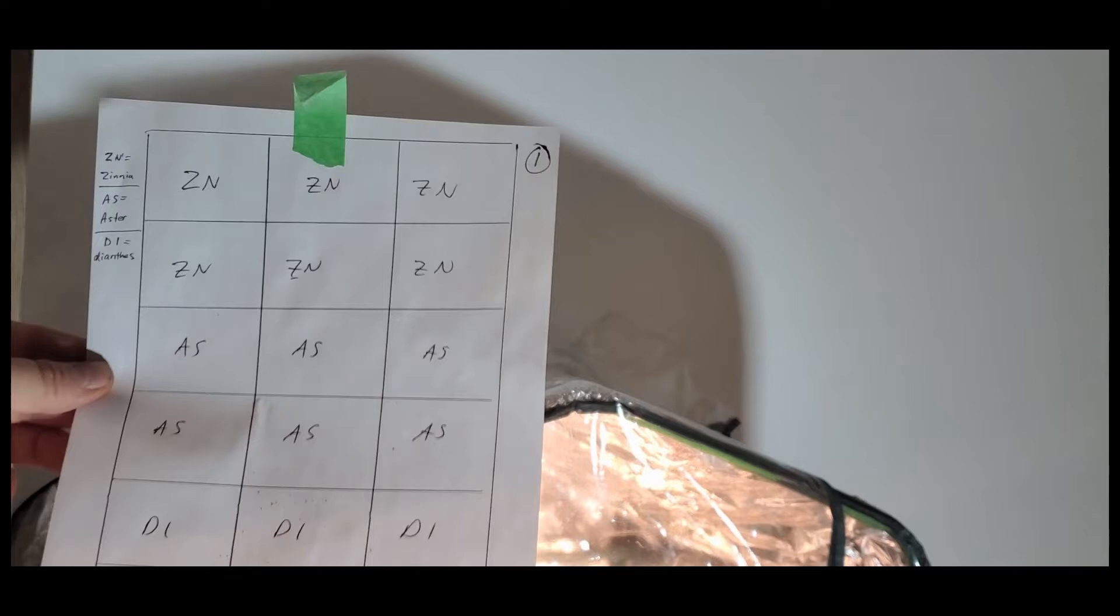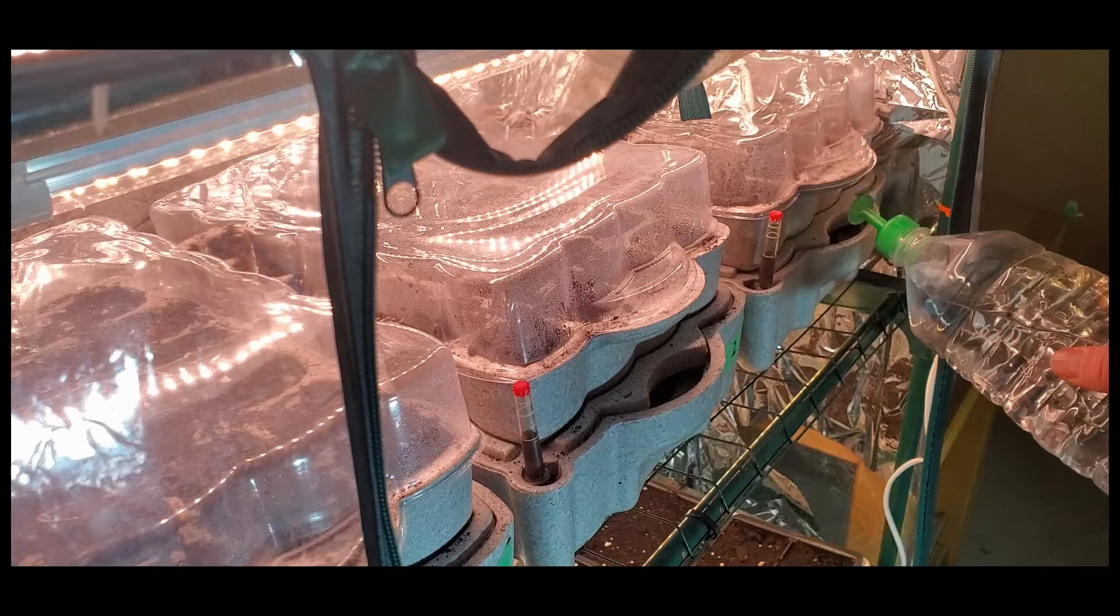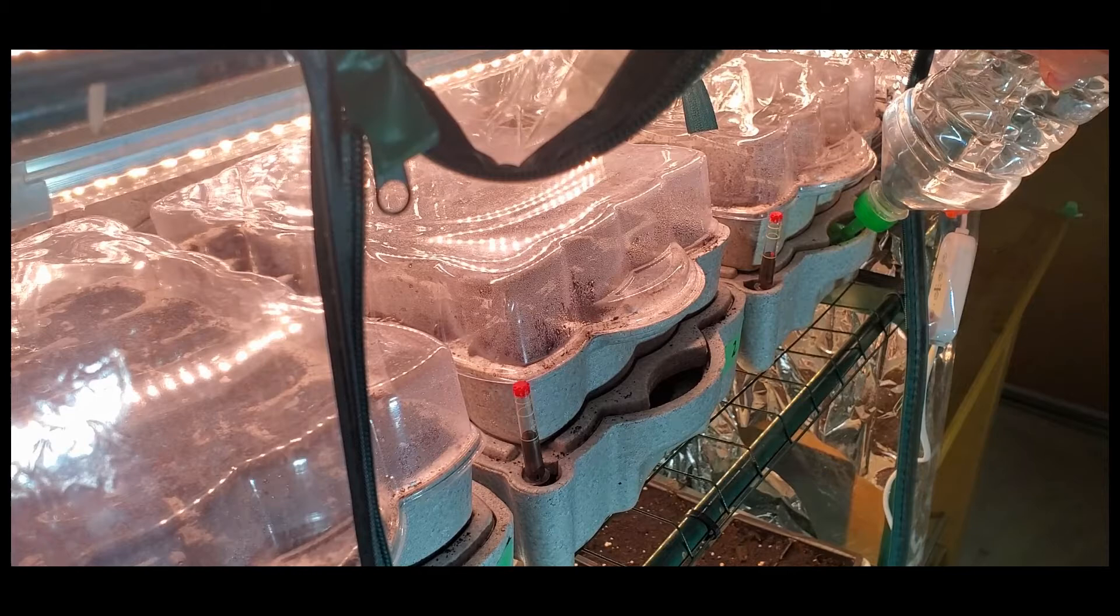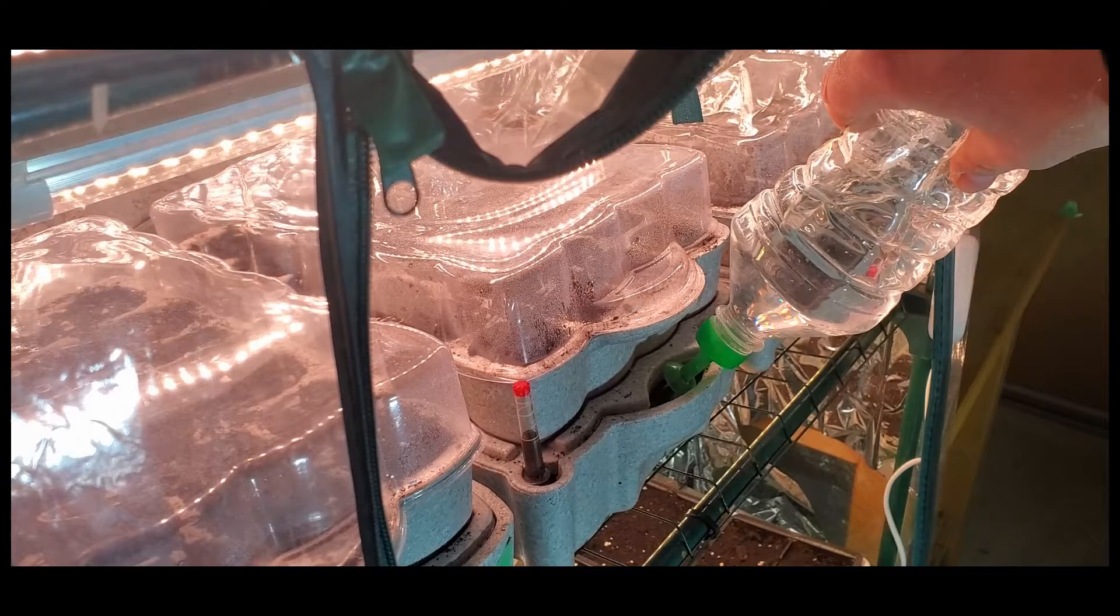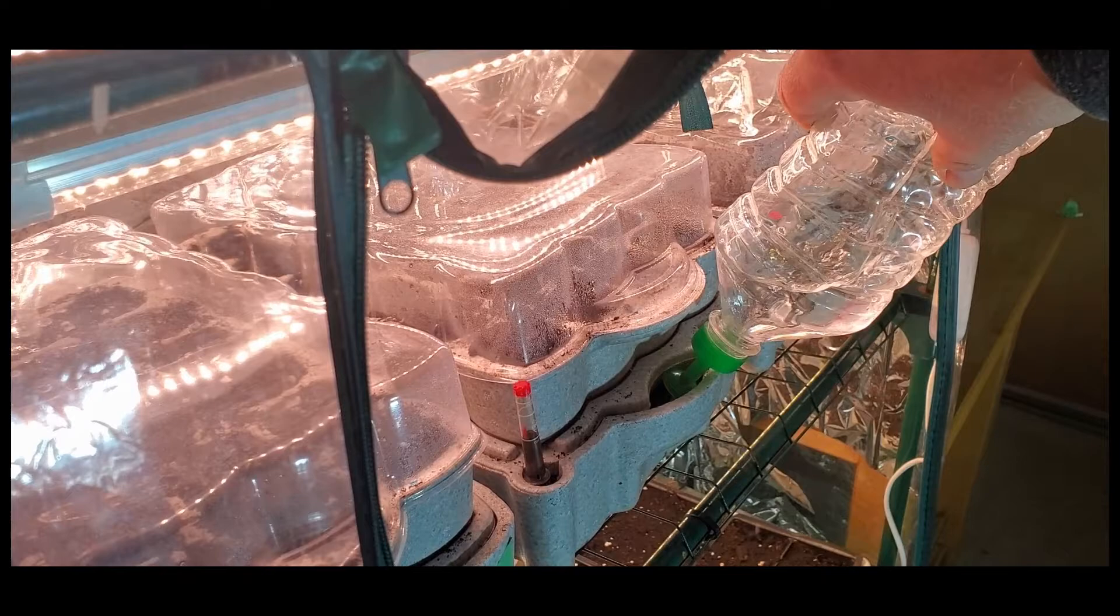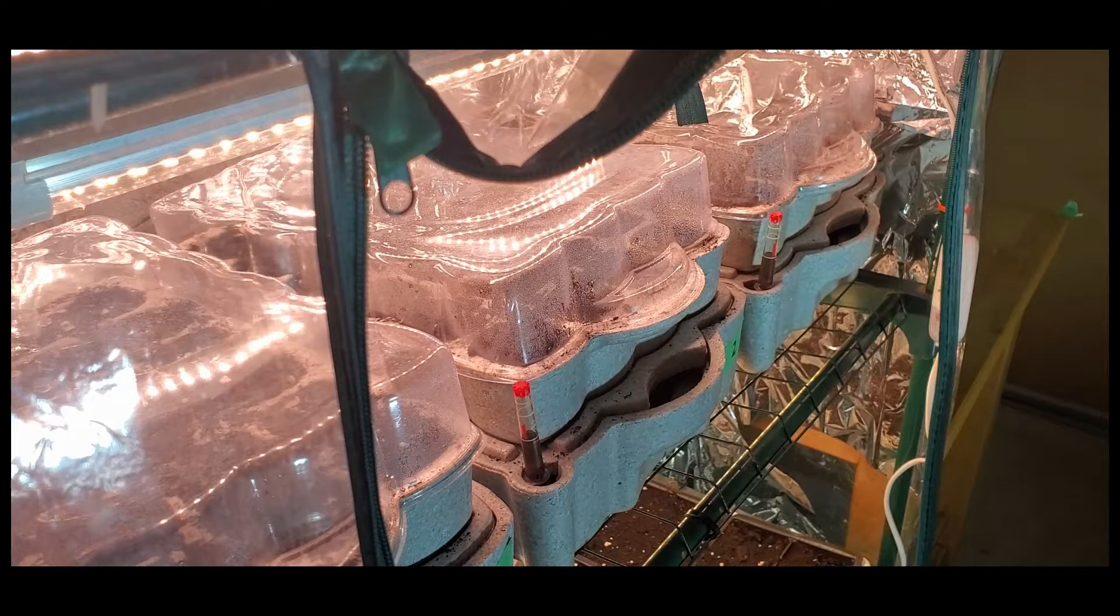You can see I've numbered the trays one, two, and three, and that corresponds to the eight and a half by eleven sheet of paper with the grid on it. It tells me what's in each cell. I just have it in a corner of the basement where the wall is not painted, it's just primed. I stick them around the wall. Whatever method you want, you can use a book or a binder, but make sure you keep track. At this point I fill up the trays. I just use that little gauge there to determine when it's full. Watering is very important. You don't want to over water or drown your seeds. Give them a good watering in, let them go for a few days, and then check again.